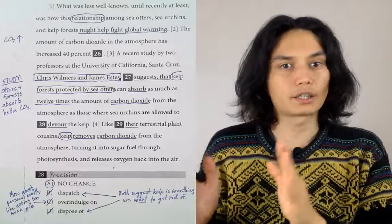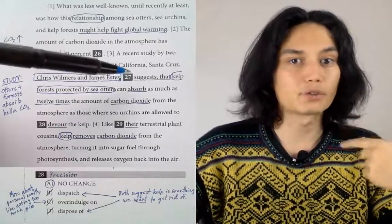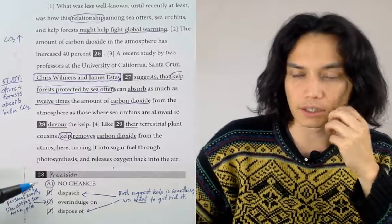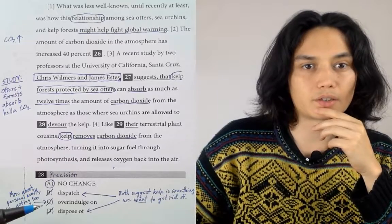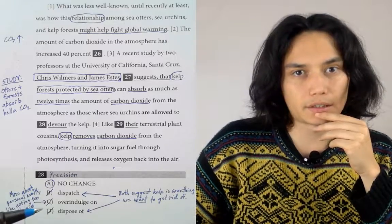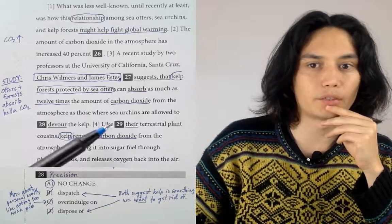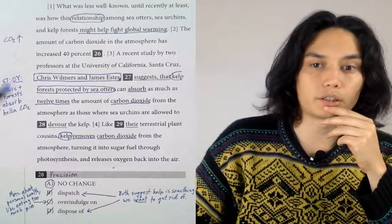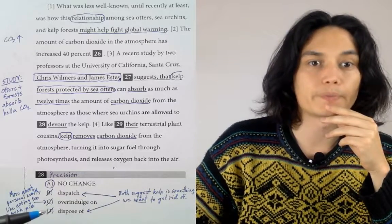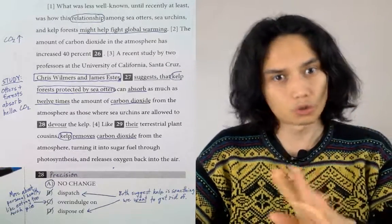When you see questions 27 and 28 in the middle of this sentence, the first thing you should do is ask yourself for each one: is this a grammar question or a writing strategy question? Do I have enough information to answer this question right now? Is it only about the way we want to frame the thought or express the thought? Or is it about what thought should we put here in the first place?